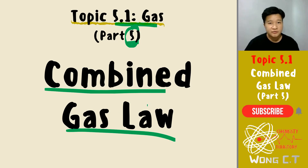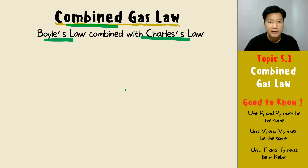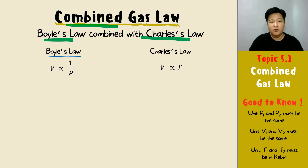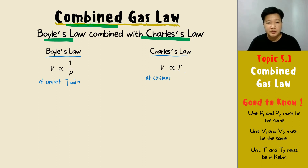The combined gas law involves Boyle's Law and Charles's Law combined together to produce a new formula. In Boyle's Law, volume is inversely proportional to pressure at constant temperature and number of moles. In Charles's Law, volume is directly proportional to temperature when pressure and number of moles remain constant.